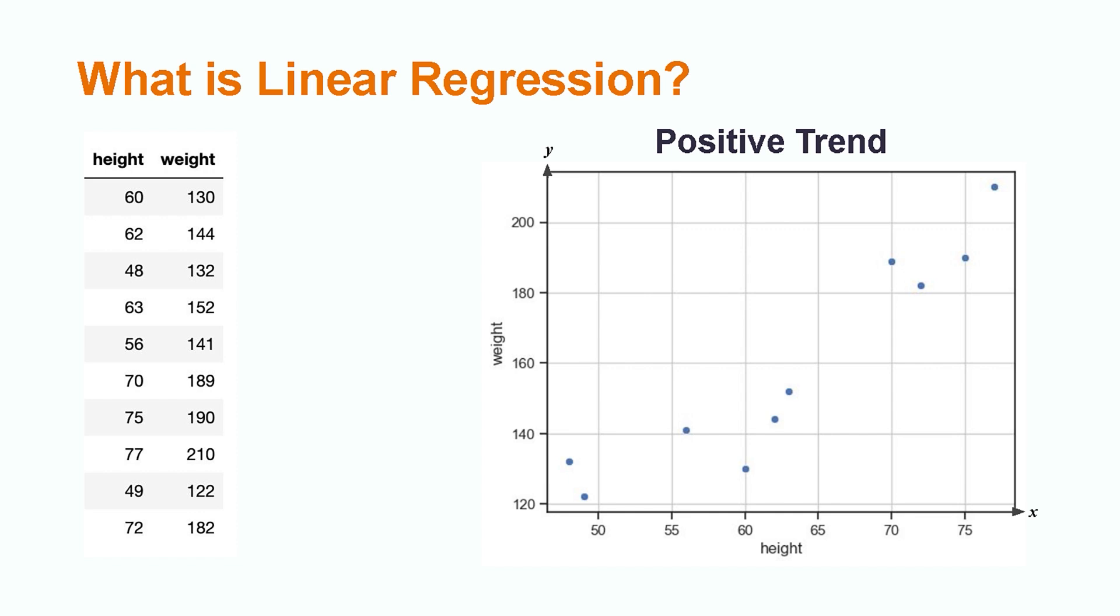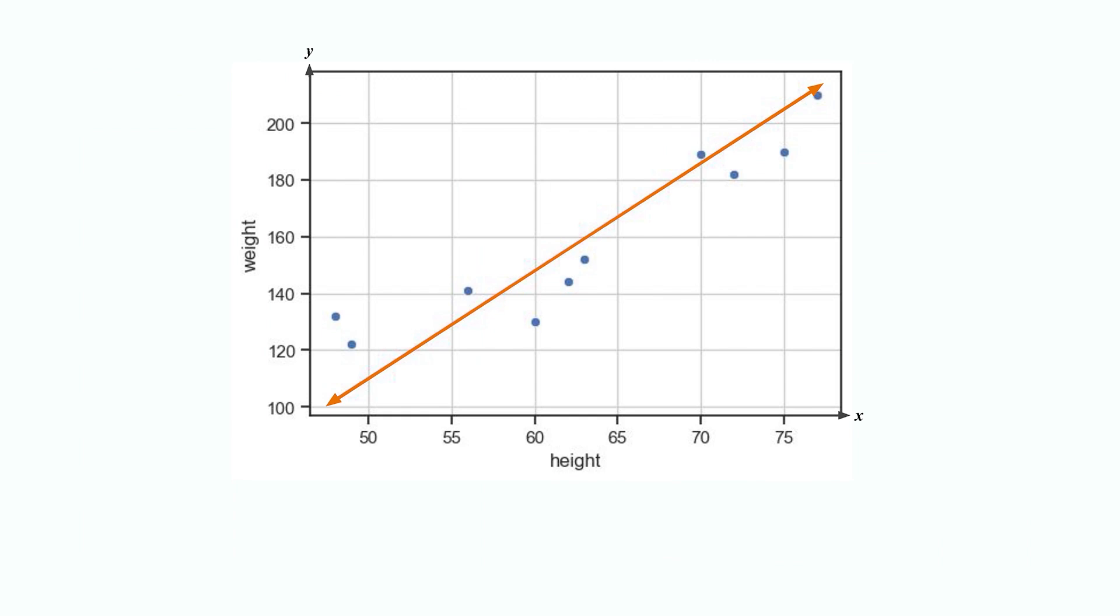All this means is that for each unit increase in the x value, the y value goes up by the same amount each time. If the data appears to have a linear relationship, then we can approximate the data with a line, either by drawing it right onto our graph like this.